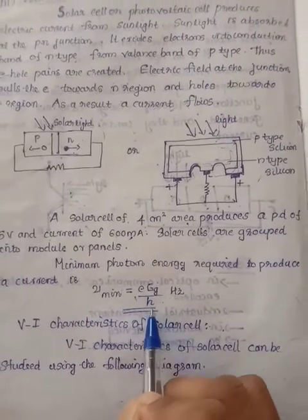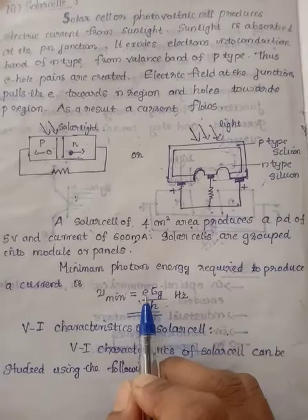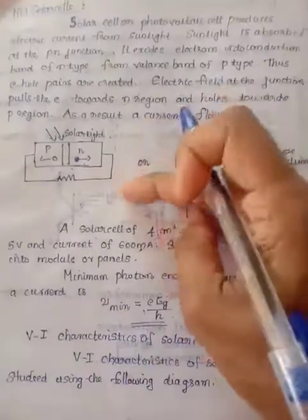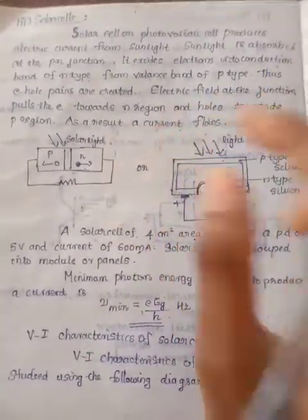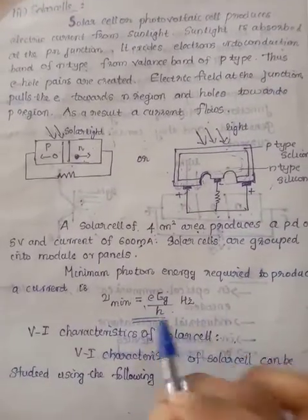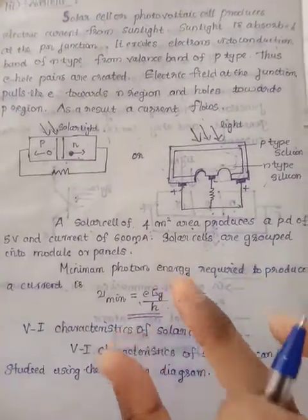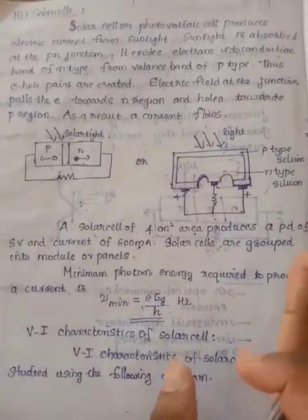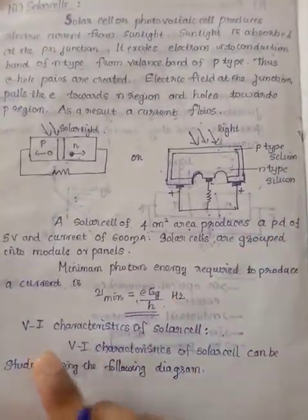The frequency minimum equation is: E_G divided by H, where E_G is the semiconductor energy gap — the gap between the valence band and the conduction band — and H is Planck's constant. This is the frequency at which current is produced, and this is related to the current.